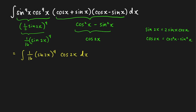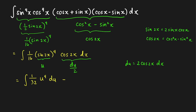We can solve this by u-substitution. Let u equal sine 2x, then du equals cosine 2x times 2 dx, so dx equals du over 2. The integral in terms of u becomes one over 32 times u raised to the fourth du. Applying the power rule, this equals one over 32 times u raised to the fifth over 5, plus C, which is one over 160 times sine raised to the fifth of 2x, plus C.